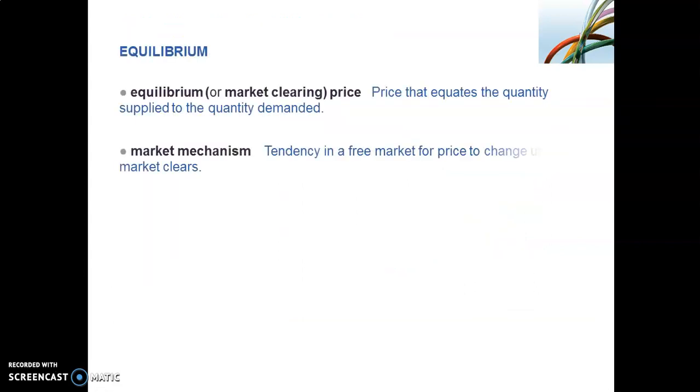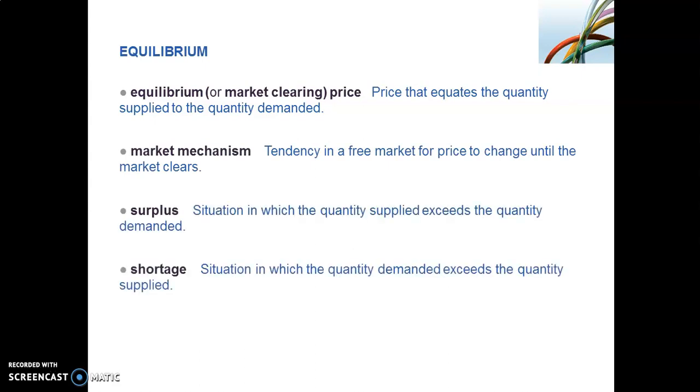The following slide recaps the concepts we spoke about. We have our equilibrium or market clearing price, which is the price that equates your quantity supplied and quantity demanded. The market mechanism. Then a surplus or market surplus, a situation where your quantity supplied exceeds the quantity demanded. And lastly, a market shortage or excess demand, where your quantity demanded exceeds the quantity supplied. Just remember these concepts.